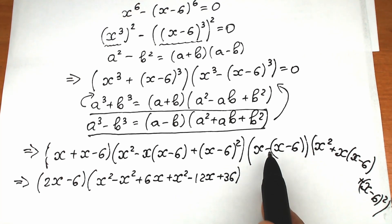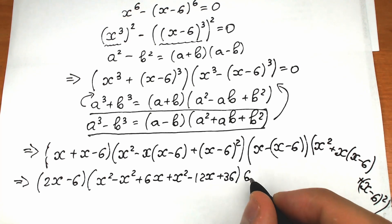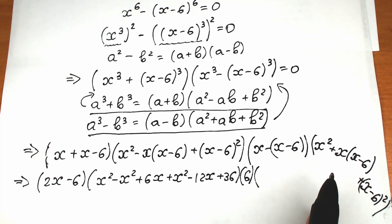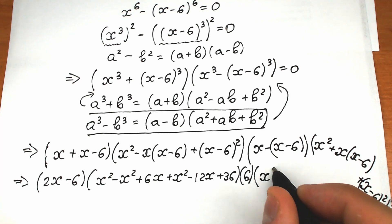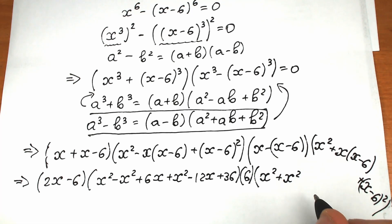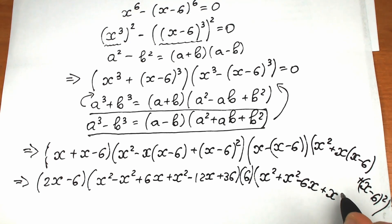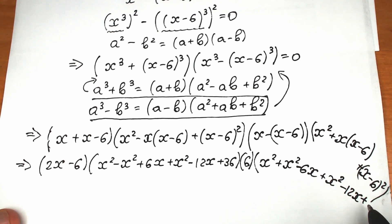For the second factor, x minus x minus six simplifies to just six, because the minus signs give us minus minus six, which is plus six. And the last parenthesis expands to x squared plus x squared minus six x, plus x squared minus twelve x plus thirty-six.